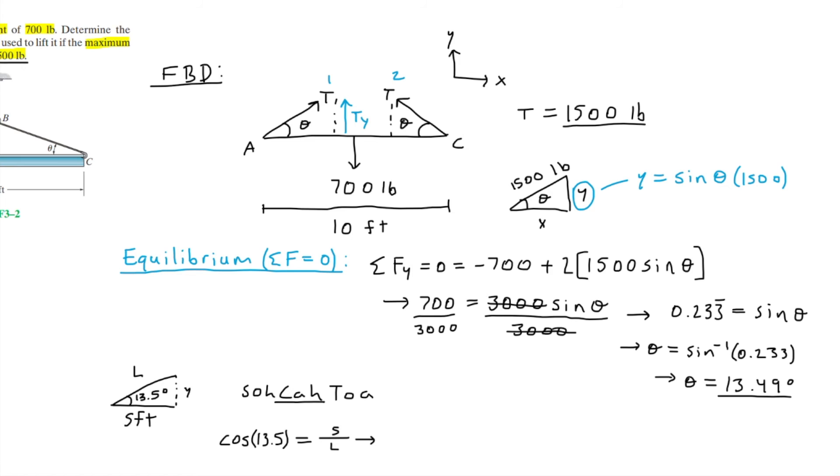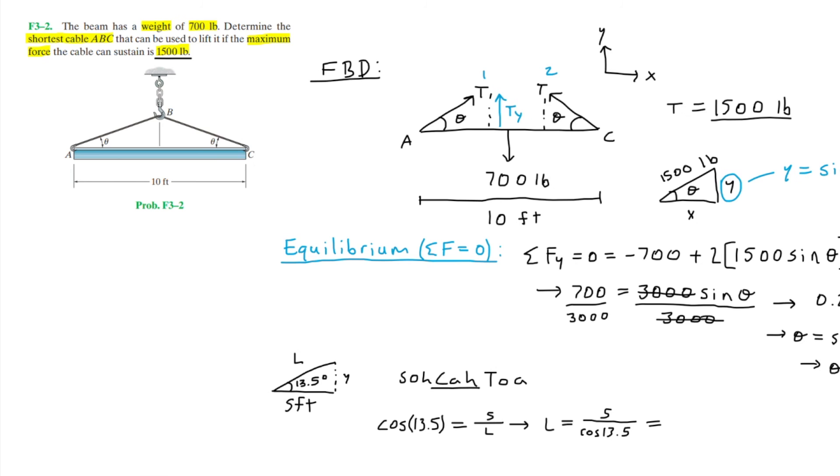Solving for L, we have L equals 5 divided by cosine of 13.5, and that is equal to about 5.142 feet.